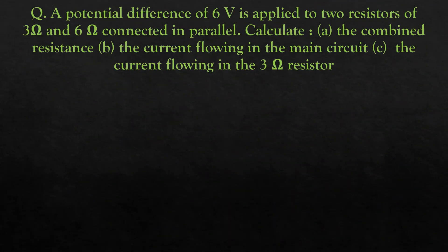The question is: A potential difference of 6 volts is applied to two resistors of 3 ohm and 6 ohm connected in parallel. Calculate (a) the combined resistance, (b) the current flowing in the main circuit, and (c) the current flowing in the 3 ohm resistor.